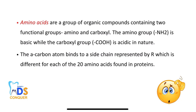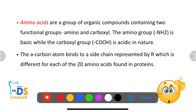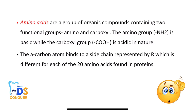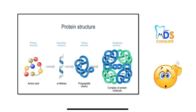Amino acids are organic compounds which consist of 2 functional groups, that is amino and carboxyl. The amino group is basic while the carboxyl group is acidic in nature. This is a simple introduction.